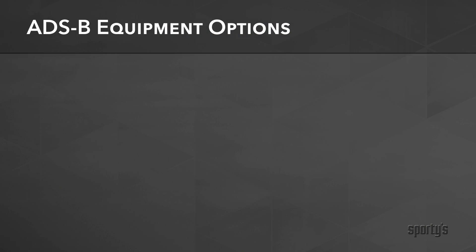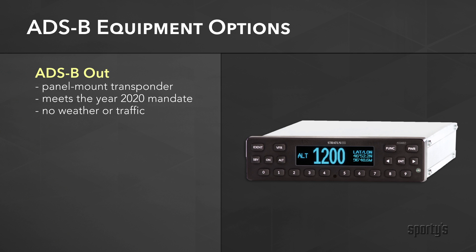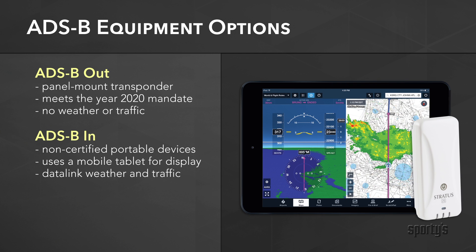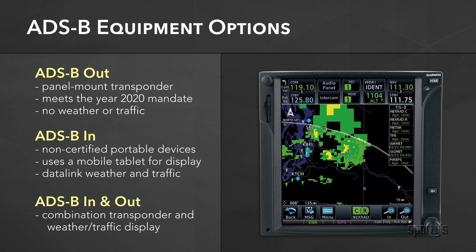Note that there are various combinations of these two parts: ADS-B Out only equipment that simply meets the FAA requirement; ADS-B In only portable devices that receive weather; and ADS-B In/Out products that do it all.